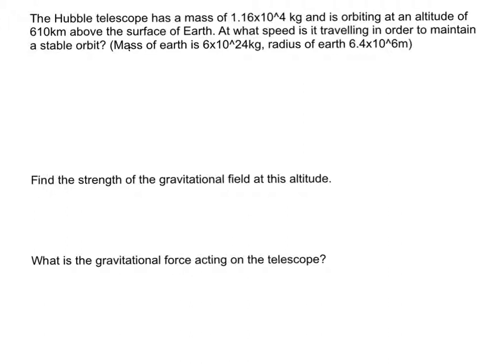The Hubble telescope has a mass of 1.16×10^4 kilograms and is orbiting at an altitude of 610 kilometers above the surface of the Earth. At what speed is it traveling in order to maintain a stable orbit? We'll give some details about the mass of the Earth and the radius of the Earth there.